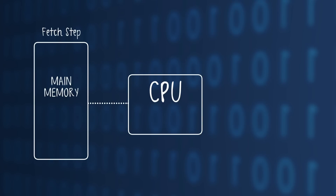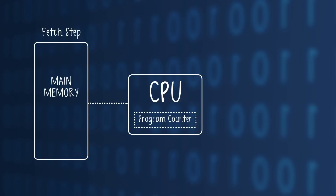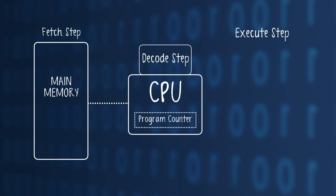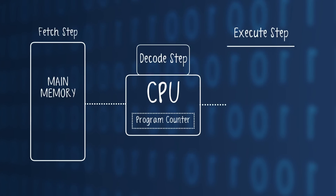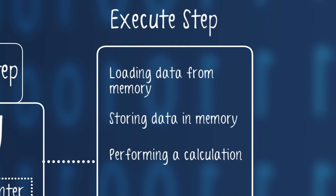The CPU uses something called the Program Counter to keep track of where it can find the instruction it needs. Once the instruction is loaded into the CPU, it needs to work out what the instruction means — it does this in the Decode step. Finally, the computer has to carry out the instruction during the Execute step. This could include loading data from memory, storing data to memory, or performing a calculation.